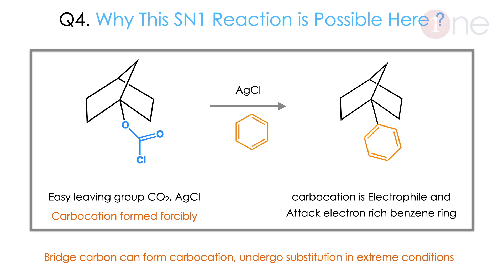Next: why is SN1 reaction possible in a rigid carbon here? Normally, rigid carbon cannot react, but in some forced cases SN1 is possible. The compound given is a chlorinated ester-type structure. Using a very strong catalyst — AgCl — and the very good leaving group CO₂, forcefully pushing out CO₂ and AgCl gives a better intermediate cation, which can then attack the phenyl ring to form the product. This is a tricky case possible under extreme conditions.